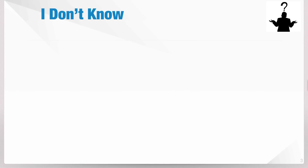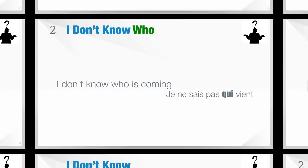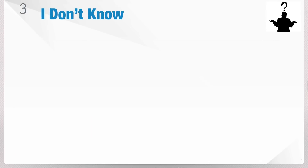Let's see the second one: 'I don't know who.' 'Who' is qui in French, and we are not going to change it, so it's easier. For example: 'I don't know who is coming' — Je ne sais pas qui vient. So 'who' is qui all the time.